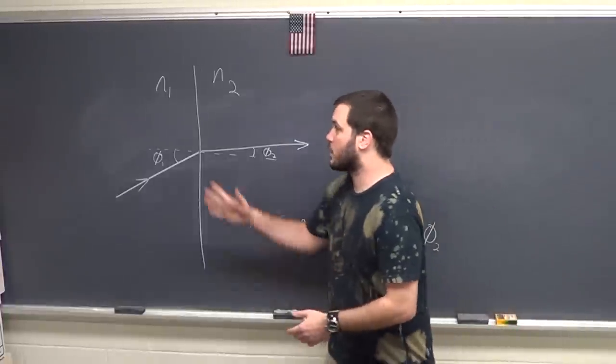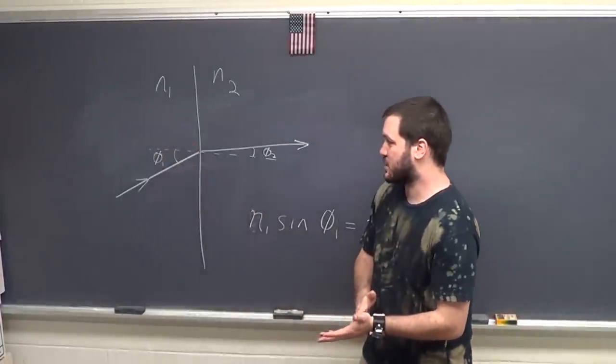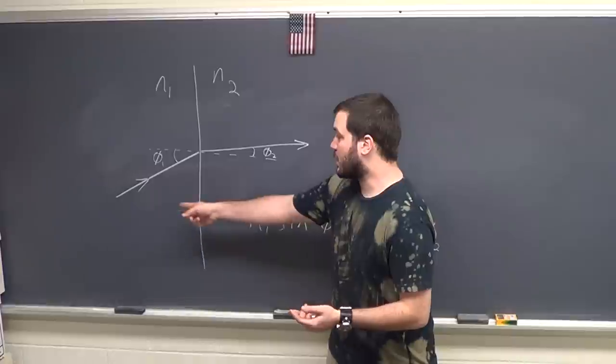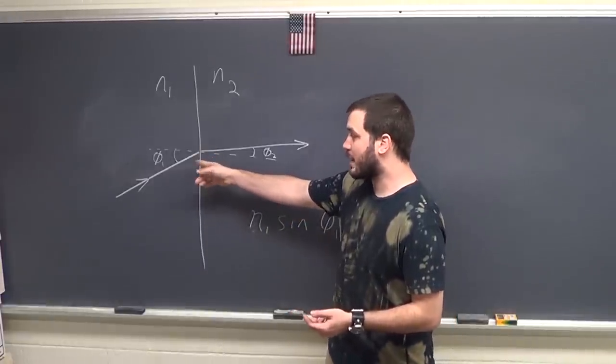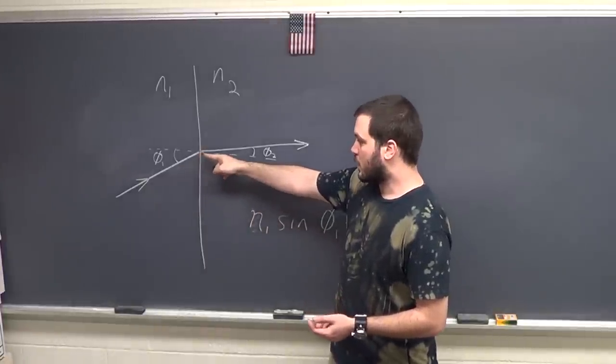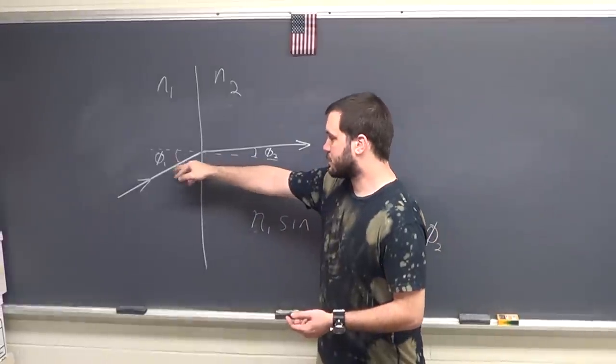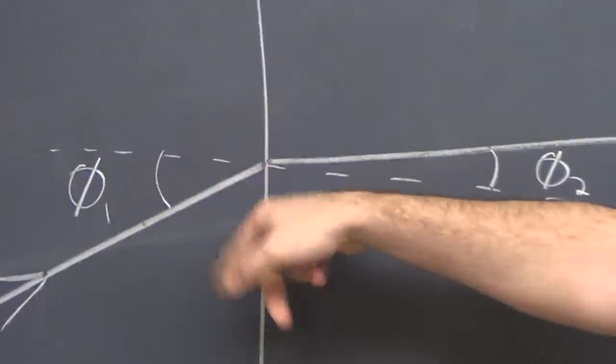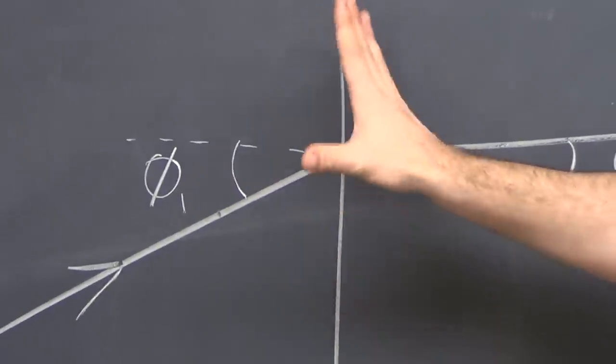The way it works is if we start in one material and its index of refraction is N1, it's going to be incident upon the surface of the material at some angle, theta1. Notice how we measure the angle off the normal of the plane of the surface.